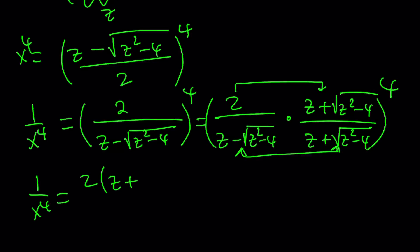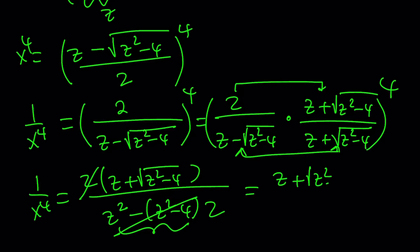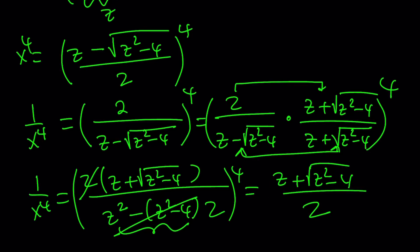So we get 2 times z plus square root of z squared minus 4, and at the bottom we get z squared from difference of two squares minus square root of z squared minus 4 squared, which is z squared minus 4. But this is equal to 4, so 2 goes into 4 two times, and we end up with z plus the square root of z squared minus 4 divided by 2 as 1 over x to the fourth. So I got 1 over x to the fourth and x to the fourth. We just need to remember to raise the whole thing to the fourth power.